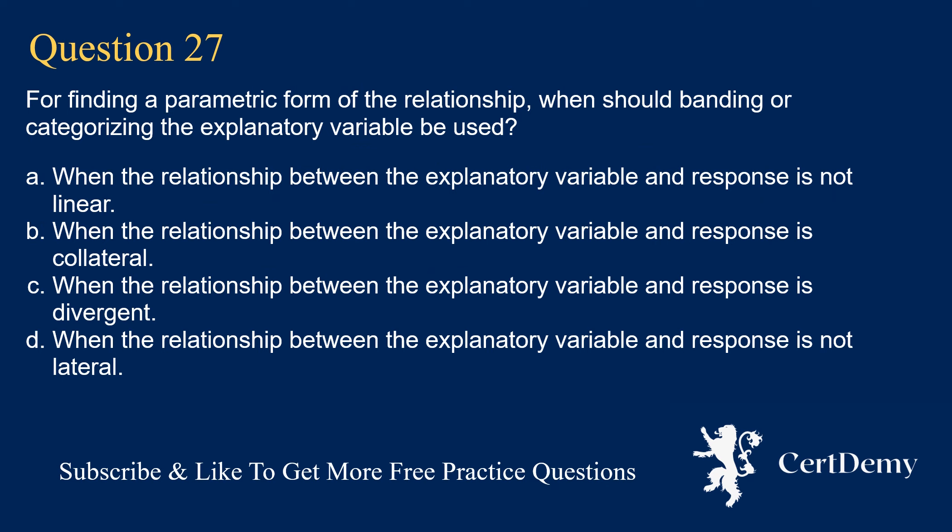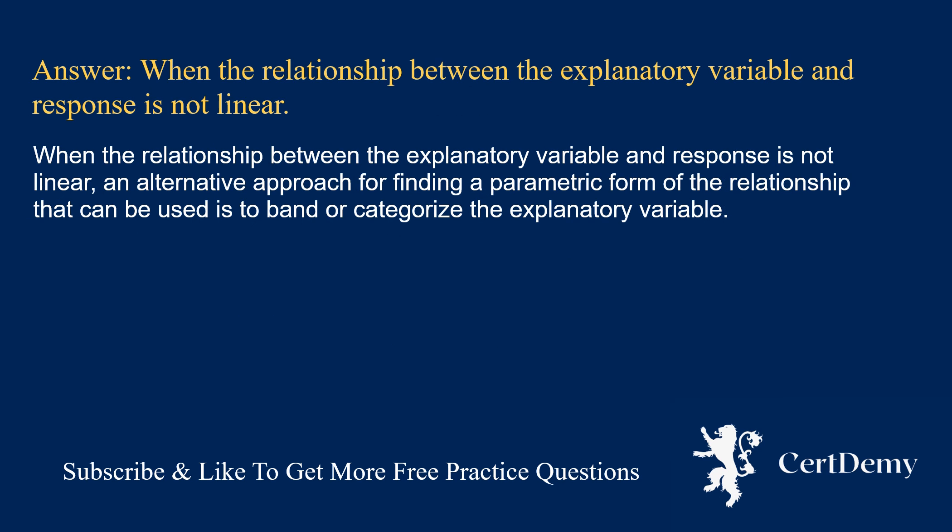Question 27. For finding a parametric form of the relationship, when should banding or categorizing the explanatory variable be used? Options: when the relationship is not linear; when it is collateral; when it is divergent; when it is not lateral. The answer is: when the relationship between the explanatory variable and response is not linear. When the relationship is not linear, an alternative approach for finding a parametric form is to band or categorize the explanatory variable.